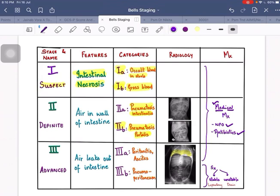Let's discuss Stage 3. Stage 3 is an advanced case of NEC, and in Stage 3 there is air leak out of the small intestine. It's categorized into 3a and 3b. 3a is peritonitis and ascites, and 3b is pneumoperitoneum.